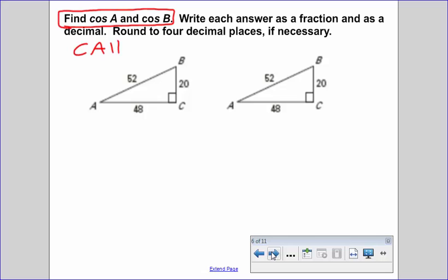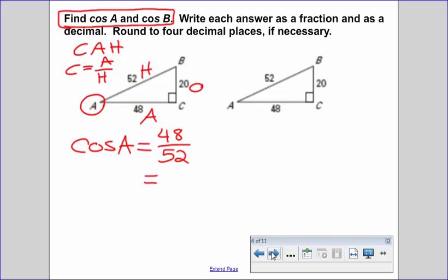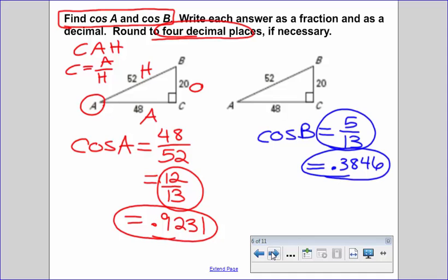So cosine CAH, or C equals adjacent divided by hypotenuse, is what we're going to focus on. We've got the same triangle up here twice. I will find cosine of A. You guys find cosine of B. So based on angle A, my adjacent side is 48. My opposite is 20. Hypotenuse is 52. Cosine of A is equal to the adjacent, 48, divided by the hypotenuse, 52. I can simplify that fraction, and I get both of those are divisible by 4. We get 12 over 13. As a decimal, and again, round to, oh, they changed the directions. Four decimal places. We're going to get 0.9231.